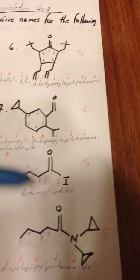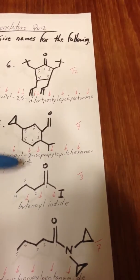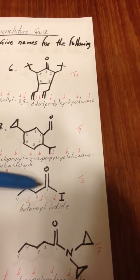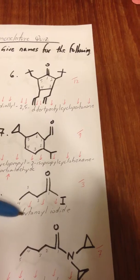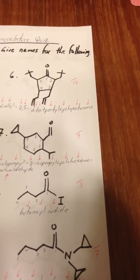This is an acyl halide, with iodine attached to a carbonyl group, so the longest chain is 1, 2, 3, 4 carbons long, so we call it butanoyl iodide.